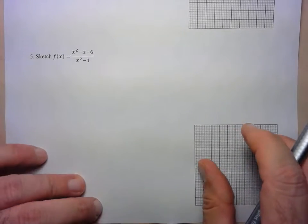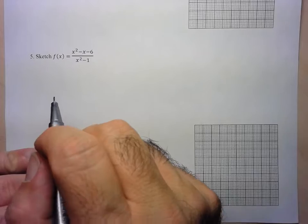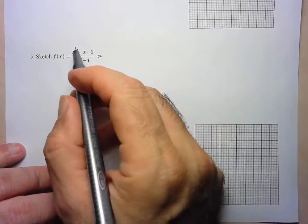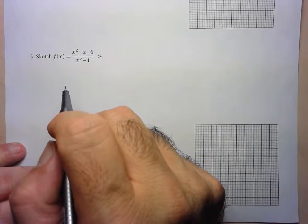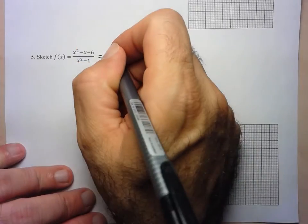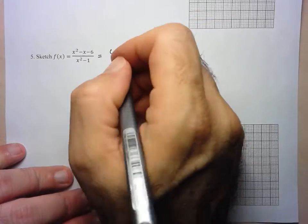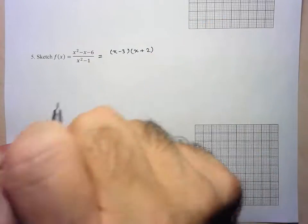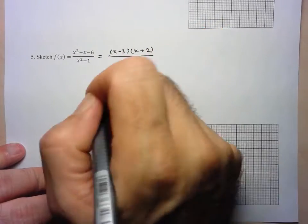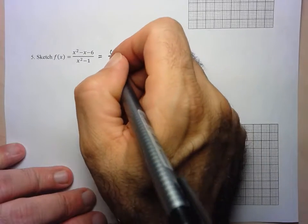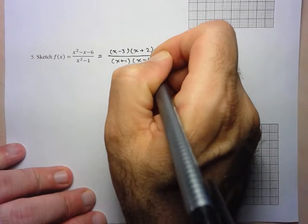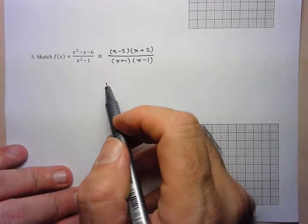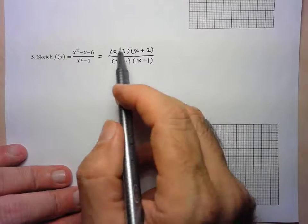Step 1 is always the same: we're going to factor to see if there's any simplification, and even if there isn't, factoring will be helpful in determining the other characteristics. The numerator is a trinomial: (x - 3)(x + 2). The denominator is a difference of squares: (x + 1)(x - 1). There's no simplification, so no holes to worry about.